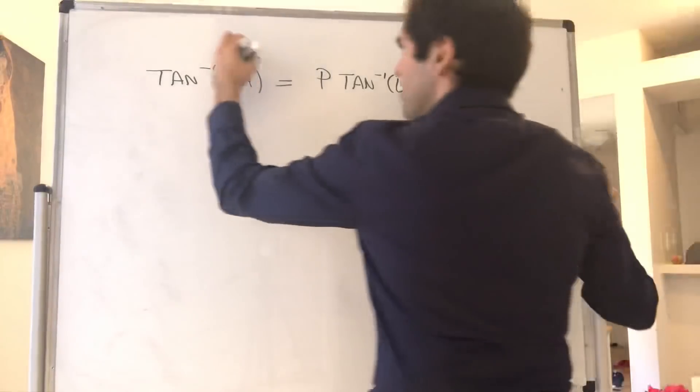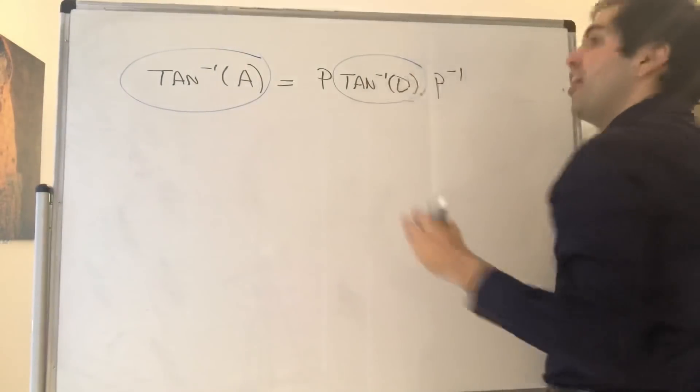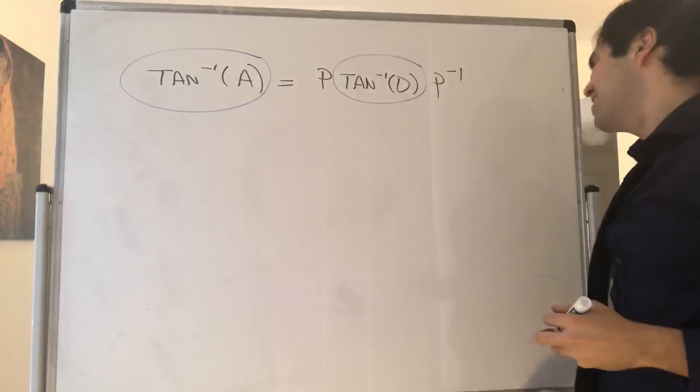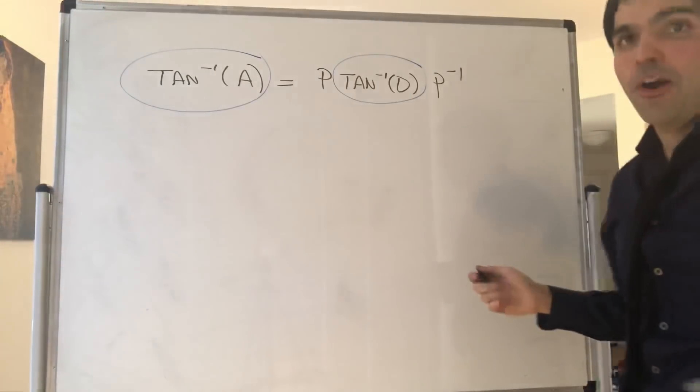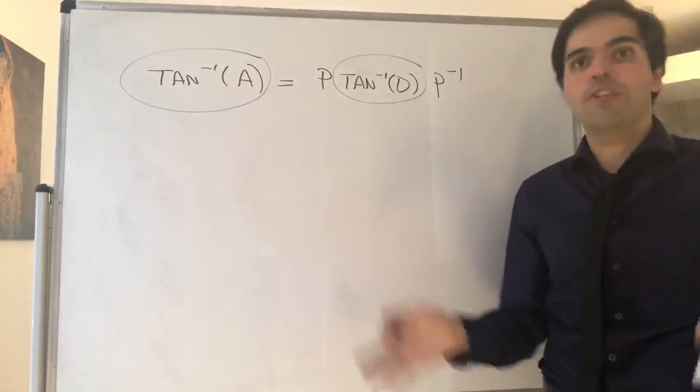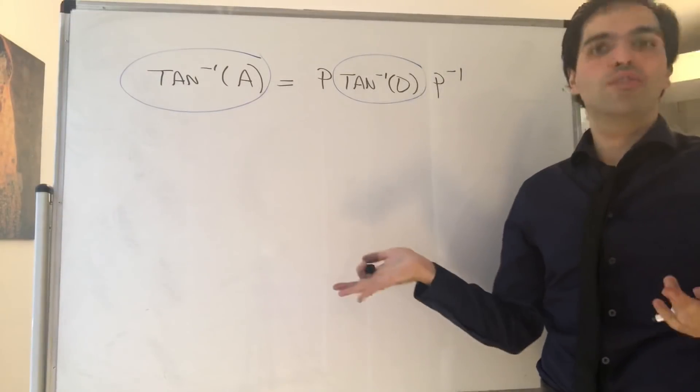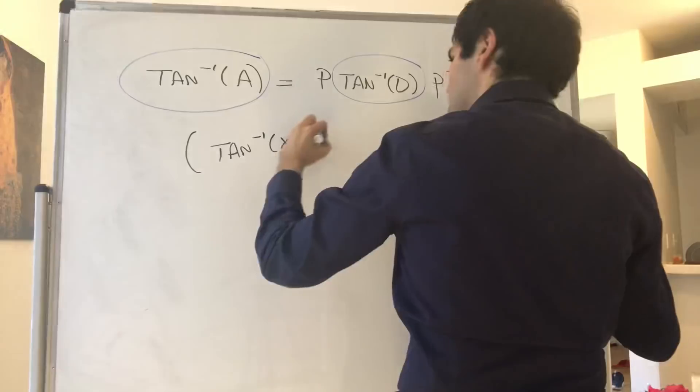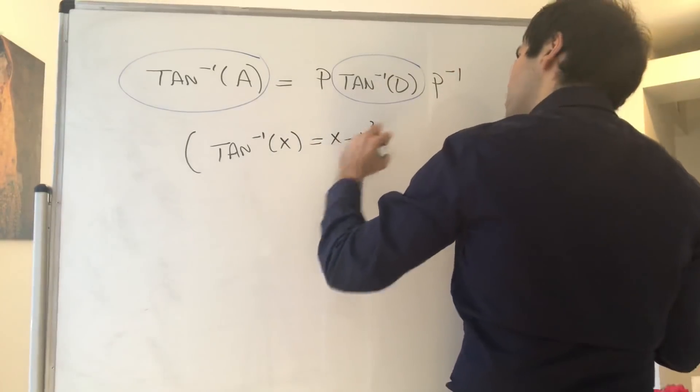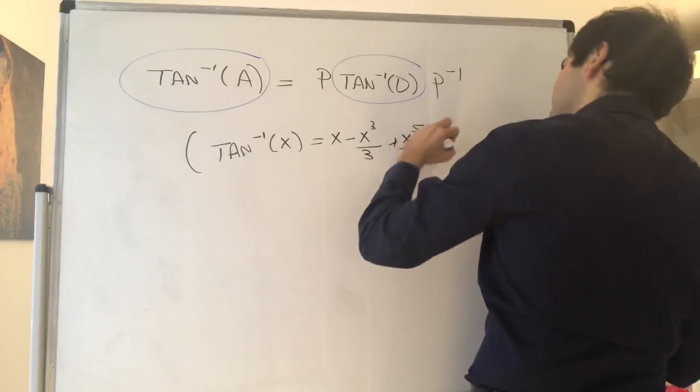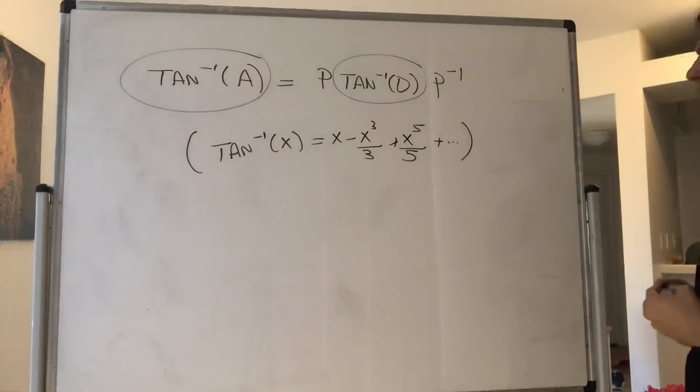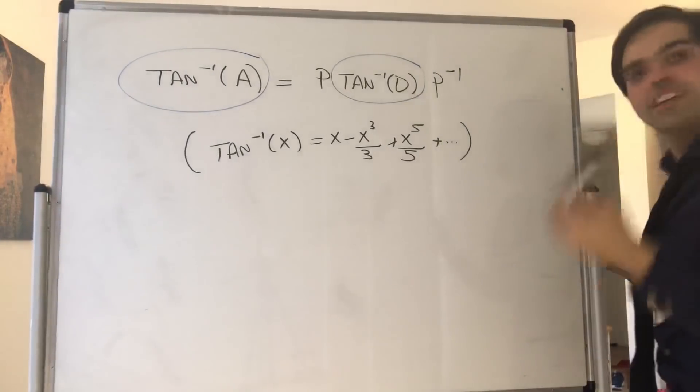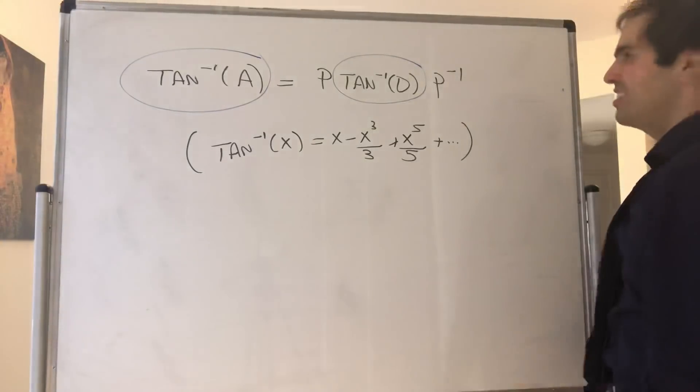And I do want to mention, I know it's a little bit hand-wavy of being able to plug in any kind of function here, but the main reason it works is because of power series. So we've shown that for any power of A, we can just do A to the N equals PD to the N P inverse. But remember, arctangent has a power series: x minus x cubed over 3 plus x to the fifth over 5, etc. And then, however, there are some issues if you want a radius of convergence, but let's just sweep it under the rug.